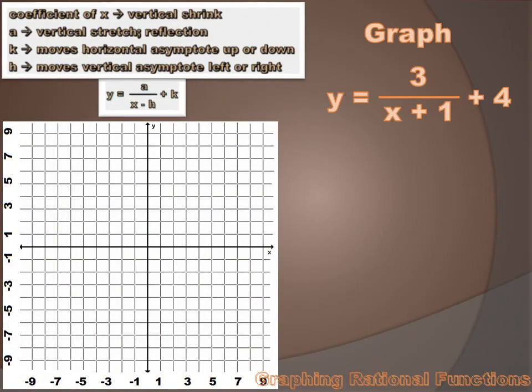Let's draw a graph of a rational function. Let's use this one: y equals 3 over x plus 1 plus 4. The first thing I want to do is draw on my asymptotes. I know that my horizontal asymptote is y equals k. My k value is positive 4, so my horizontal asymptote is at y equals 4. I'll draw that.